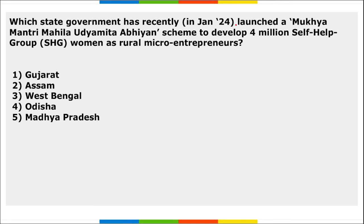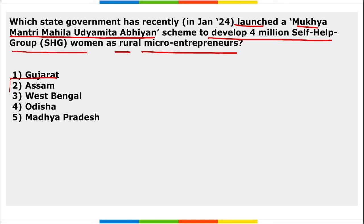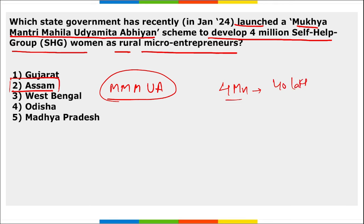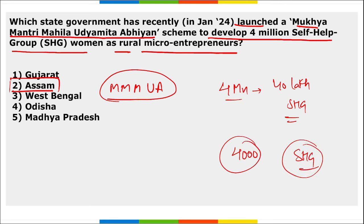Next: which state government recently launched the 'Mukhya Mantri Mahila Udyamita Abhiyan' — a scheme to develop women entrepreneurs? Under this scheme, loans of 4,000 crore rupees will be offered to self-help group members committed to personal business plans, along with their group activity. The aim is to make these SHG women 'Lakhpati' — earning at least 1 lakh rupees per annum.